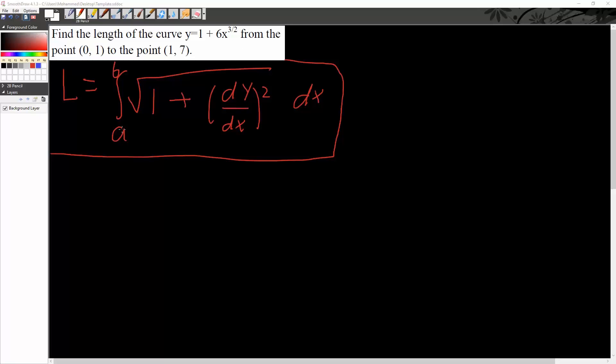So our a, the lower bound, would be 0, and our b, the upper bound, would be 1. So let's get started.